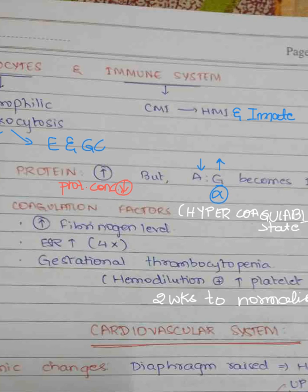In the leukocytic system, there is neutrophilic leukocytosis because the leukocyte concentration increases up to 20,000 cells per cubic millimeter. This is influenced by the hormones estrogen and glucocorticoids, particularly cortisol, which is responsible for the increase in leukocyte count. The immune system shifts from cell-mediated immunity to humoral-mediated immunity and innate immunity.